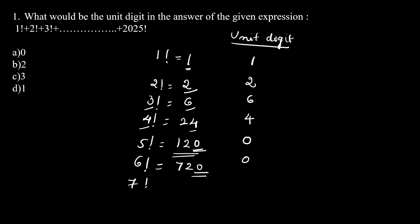We can find that if we compute any of the remaining factorials, since there is a 0 in the unit digit, all will have a 0 in the unit digit. So if we add all the unit digits — 1, 2, 6, 4 — that is 6 plus 4 is 10, plus 3 is 13. The unit digit of 13 is 3. So the answer is option C, which is 3.